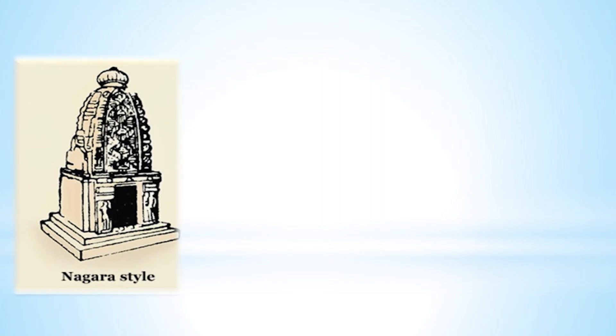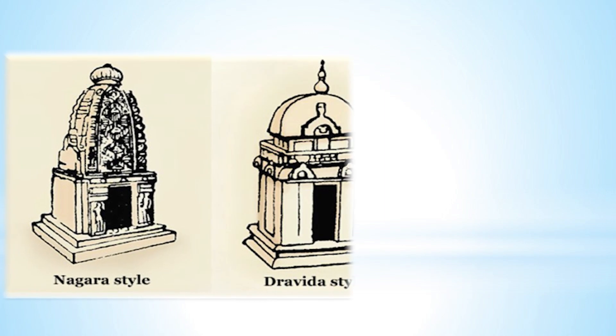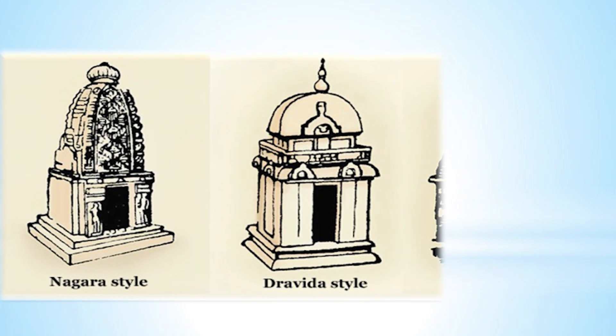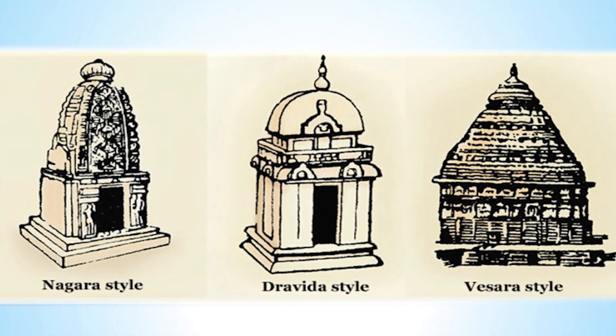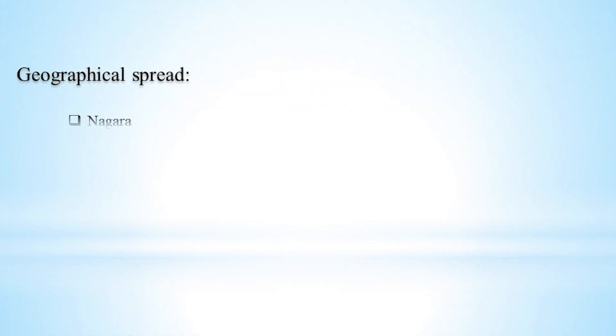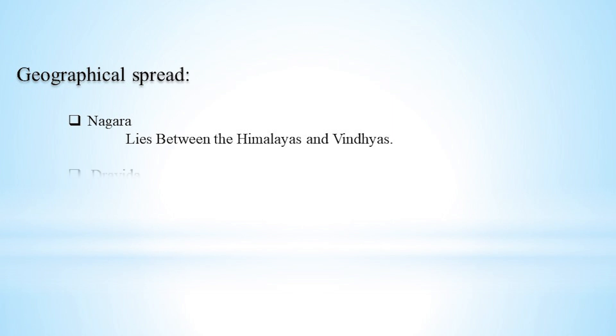The first image shows Nagara temple architecture, the second is Dravida style, and the third is Veshara type of temple architecture. These temples are present in different geographical areas. Nagara temples were present between the Himalayas and Vindhya mountains.